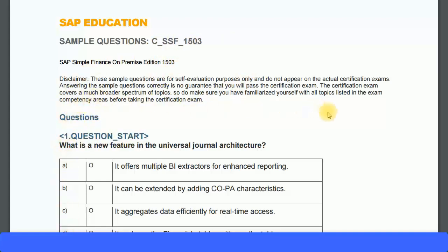Let's look at the first question: what is a new feature in the universal journal architecture? Think of the universal journal architecture as the universal journal entry table, or simply the ACDOCA table. The ACDOCA table stores five types of entries: new journal ledger entries, CO entries, asset accounting entries, material ledger entries, and account-based profitability analysis entries.